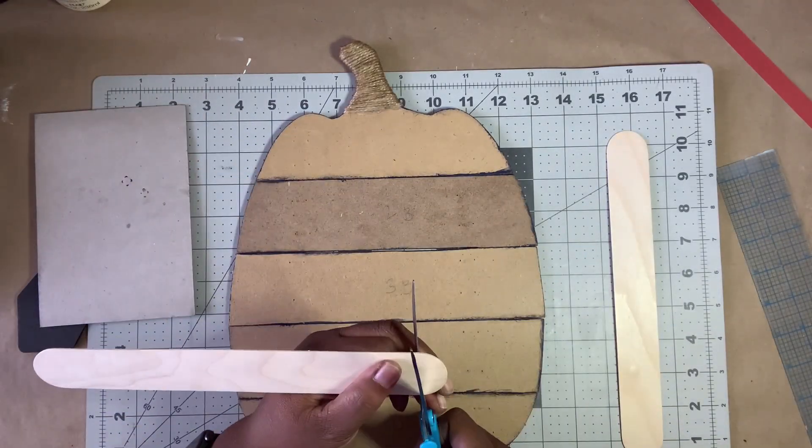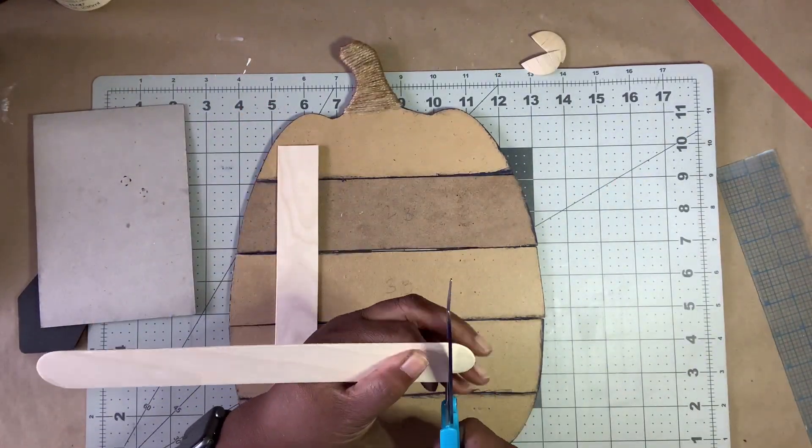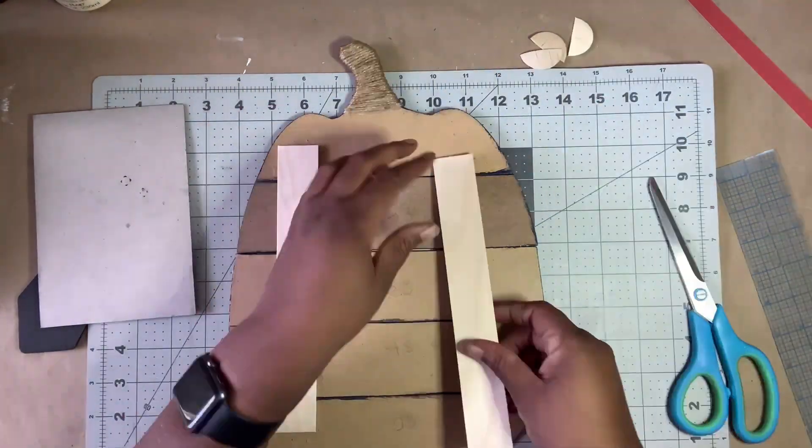Next, I used two more of the giant craft sticks from Walmart to piece the pumpkin together. I also used the back of a picture frame as a stand.